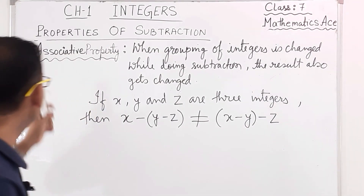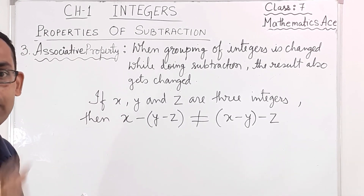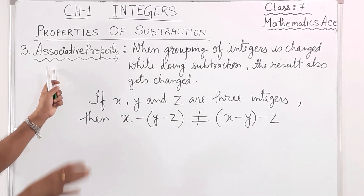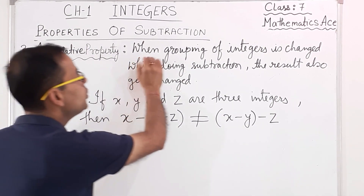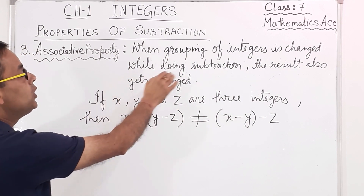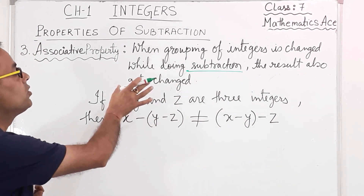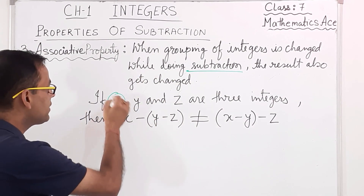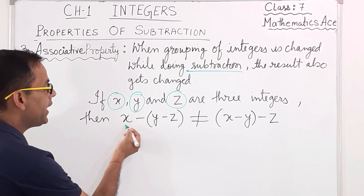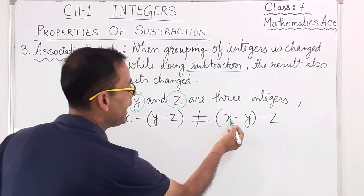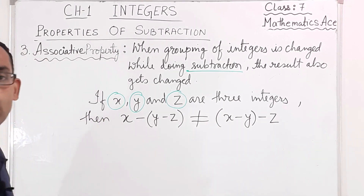The third property is the Associative Property. Like in the properties of addition, associative property also exists in subtraction. When the grouping of integers is changed while doing subtraction, the result also gets changed. If X, Y, and Z are three integers, then X minus (Y minus Z) is not equal to (X minus Y) minus Z.